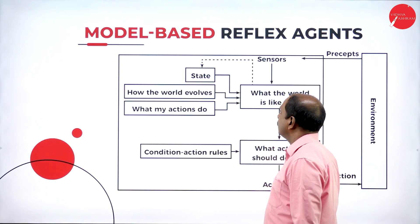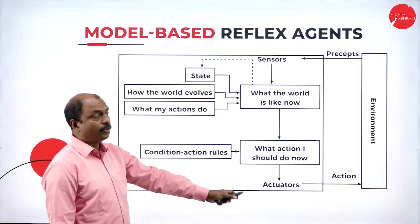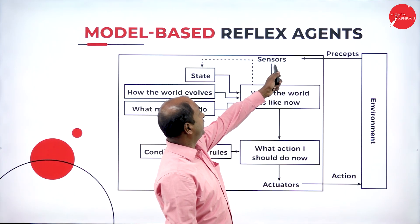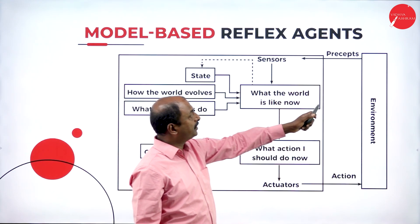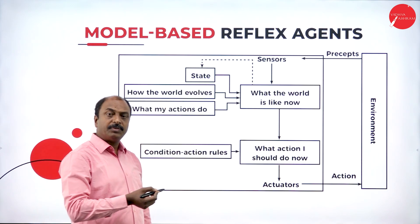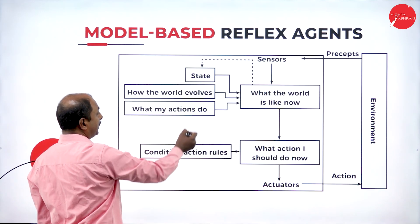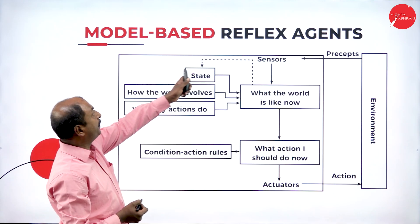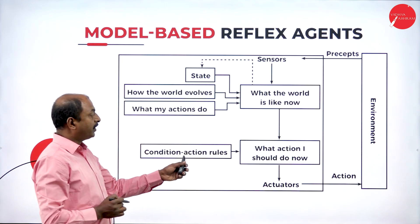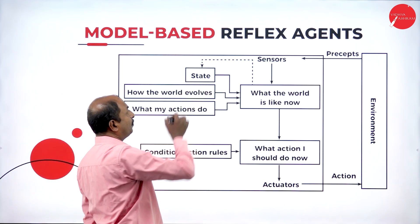Look at this diagram. This is the environment and this is an agent. Here in the agent, these are the sensors and actuators. The sensor perceives the environment or accepts the data from the environment. If you compare this with the previous version, the simplest reflex agent, there is one more additional component in this model based reflex agent, apart from condition action rules. That additional component is state.